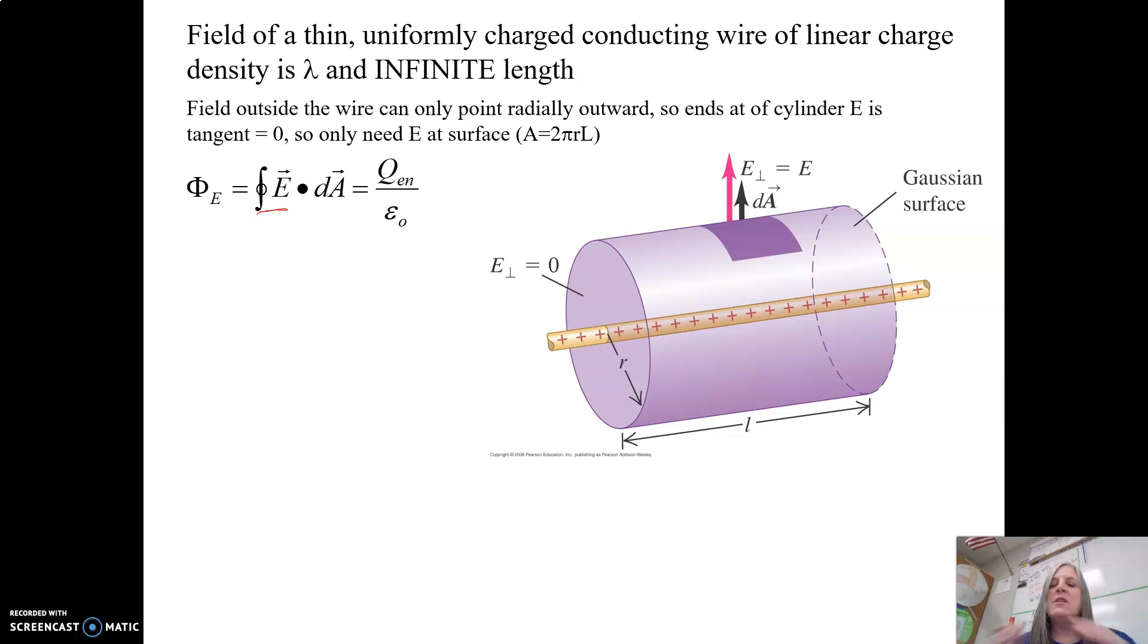So if we use a cylinder, we have an infinite line of charge, then the electric field is just going to radiate out or in, depending upon what it's charged with. But if it's positive charge, it's going to radiate out. And then the electric field is going to be perpendicular to the surface.